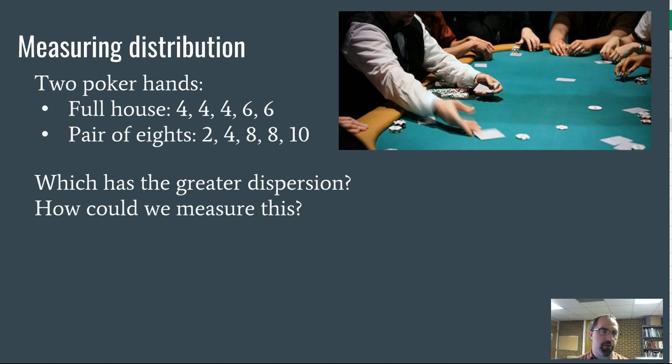Let's just pretend we're looking at poker hands and we've got one hand that's a full house, 4, 4, 4, 6, 6, another one that's 2, 4, 8, 8, 10. Which of those is more dispersed? Which is more spread out? We could say just look at it and eyeball it and say what we think, but how could we measure that? How could we quantify it? We want to be statisticians. We don't just want to do guesswork.